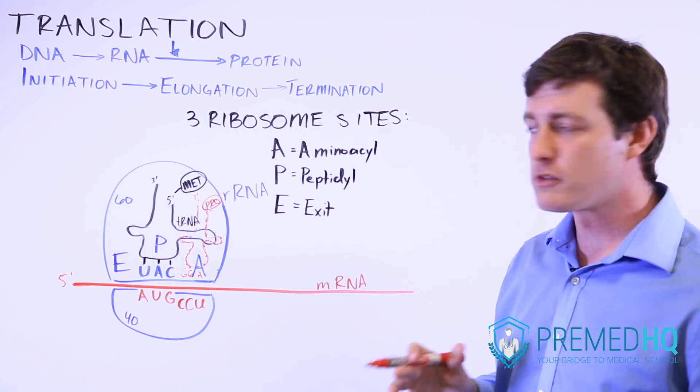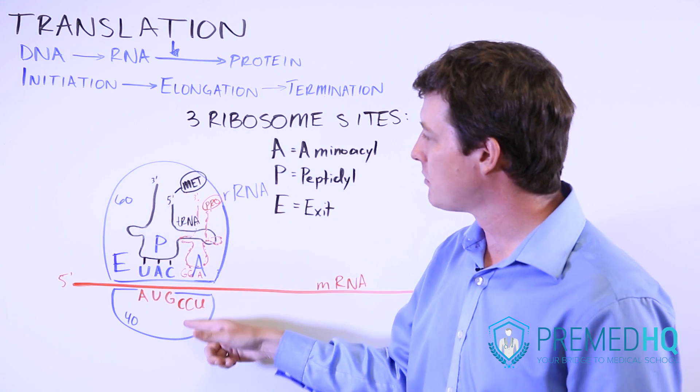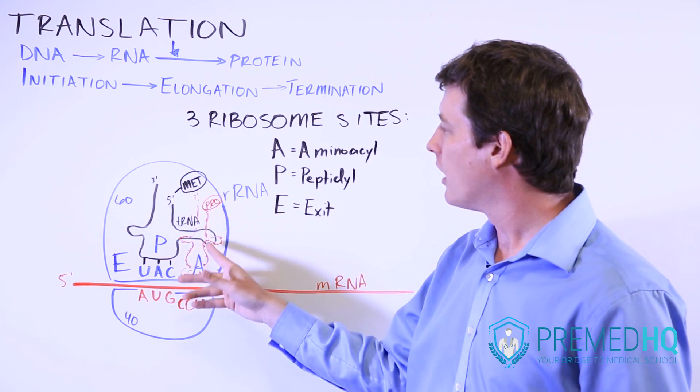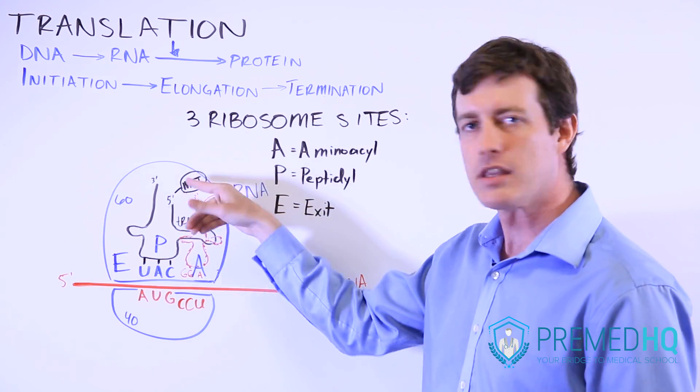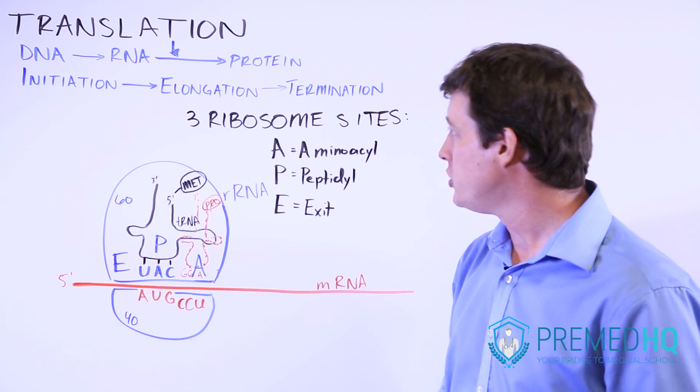In order to do that, let's review. Remember first we had to form the initiation complex with both ribosomal subunits, the mRNA, and the tRNA coding for methionine, because that always corresponds with the start codon of AUG.